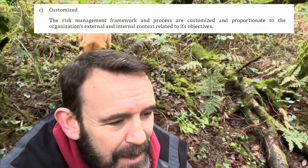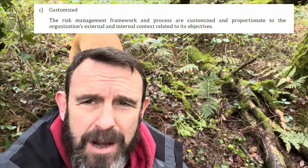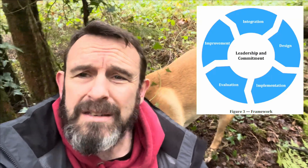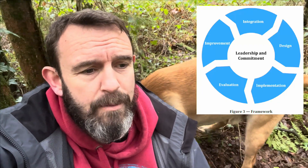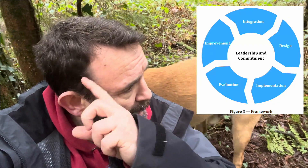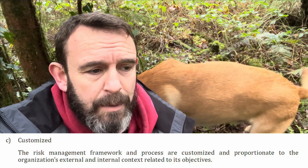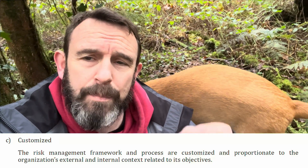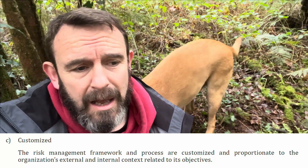When we talk about customising, we're talking about customising the risk management process but also customising the risk management framework. The framework is basically the architecture — it's how you've integrated and designed, and you're evaluating your risk management process through the framework. As this principle says, the framework and the risk management process should be customised and proportionate to the context in which the organisation exists — that's the external and the internal — based on its objectives.